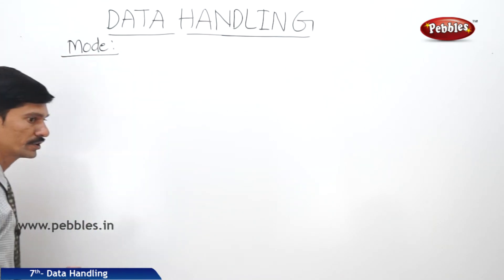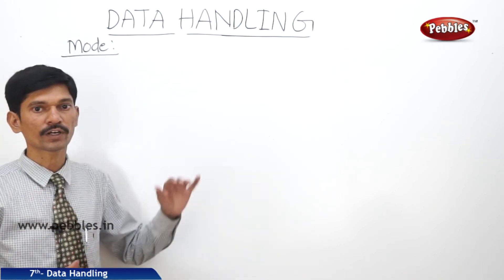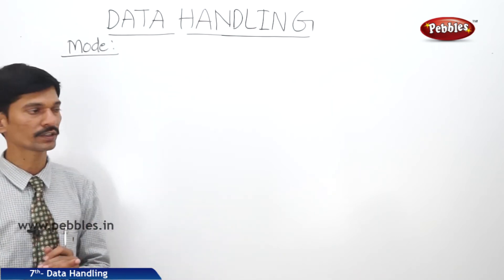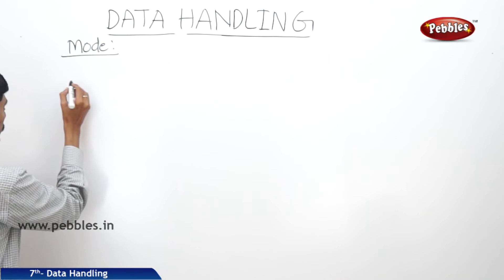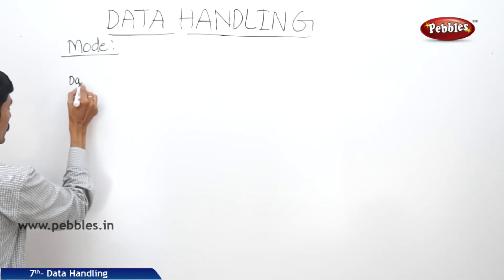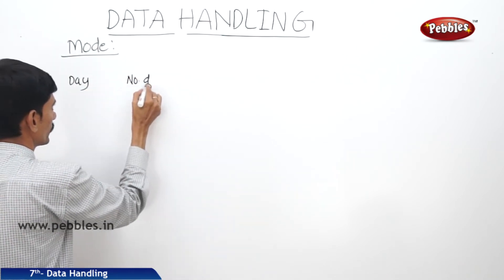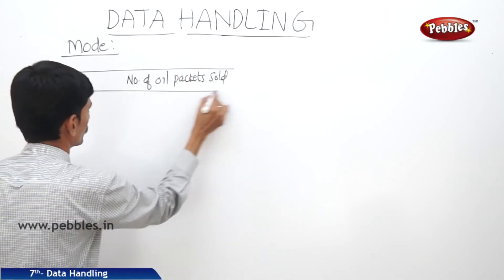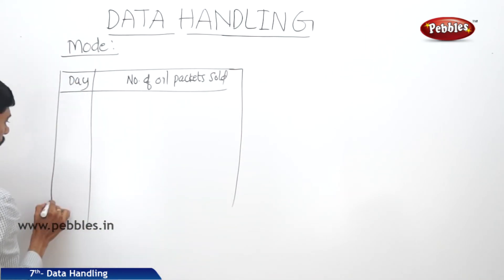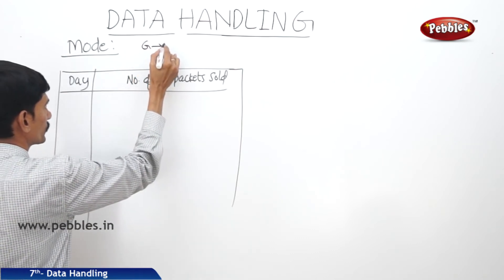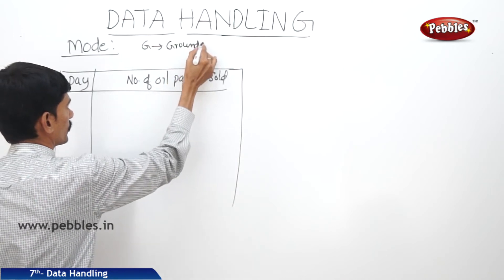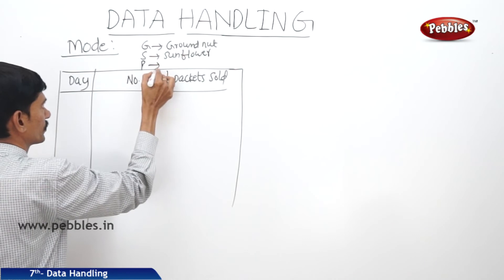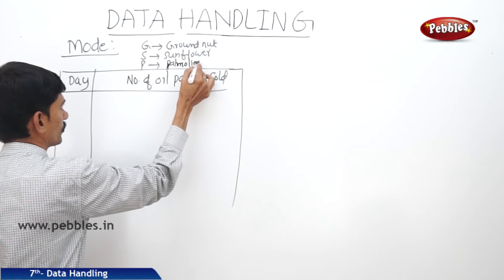For example, if a shopkeeper wants to find out which type of oil packet he has to stock more in number, he collects information of the oil packets sold in the last week in a table. The types recorded are G for groundnut oil, S for sunflower oil, and P for palmoilene oil packet.